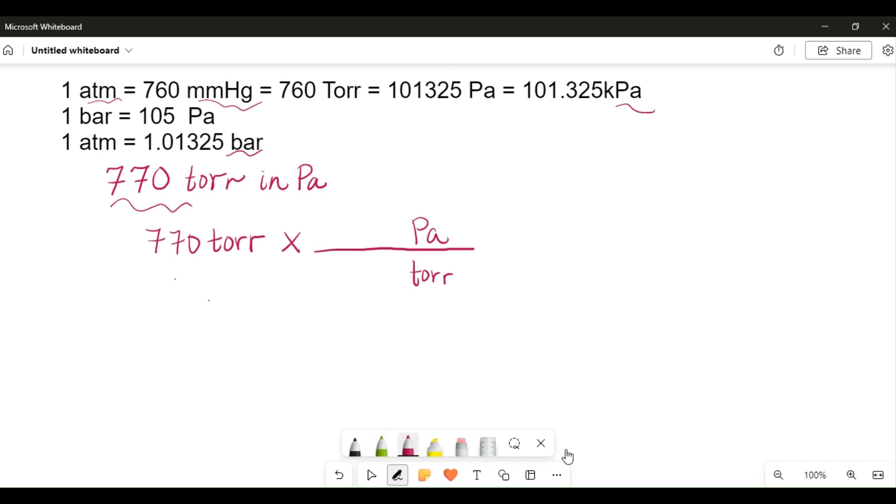The reason we do this is because since we're going from Torr to Pascals, we want to arrange the unit conversion in such a way that the units we don't want anymore, which is Torr, can easily cancel out, and the unit that we do want in the numerator, Pascals, stays so we can have our answer in Pascals.